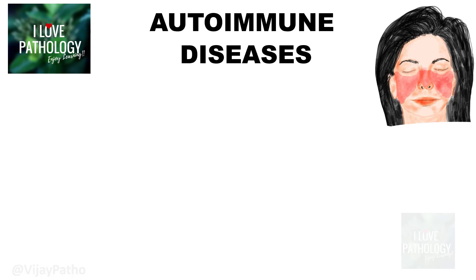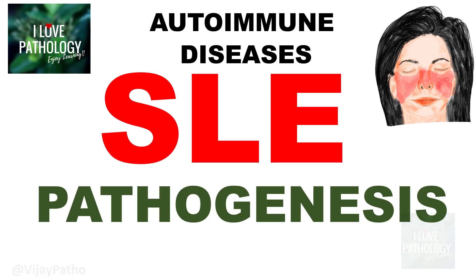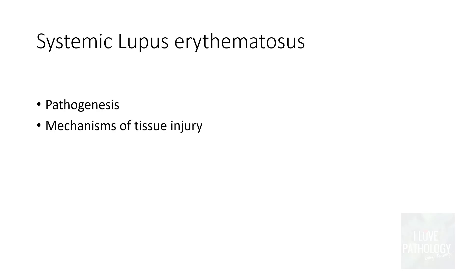In continuation with the autoimmune diseases series, we were learning about systemic lupus erythematosus. In the last session we talked about autoantibodies, and in this session let's understand in detail about the pathogenesis of systemic lupus erythematosus and also the mechanisms of tissue injury in SLE.